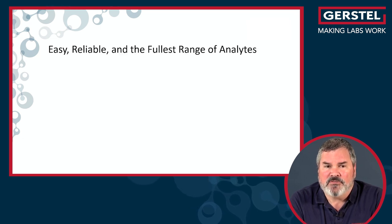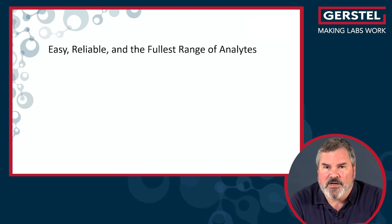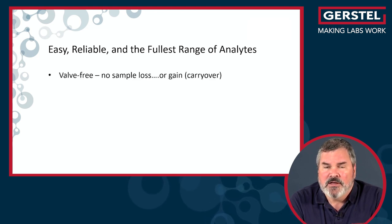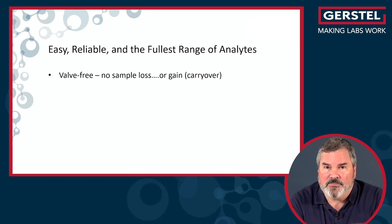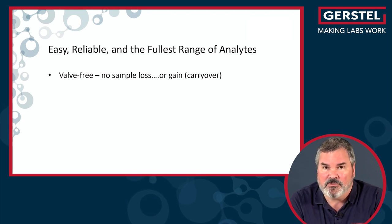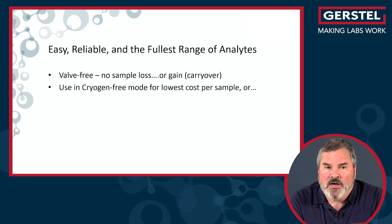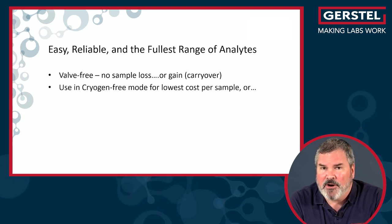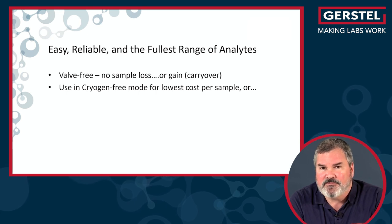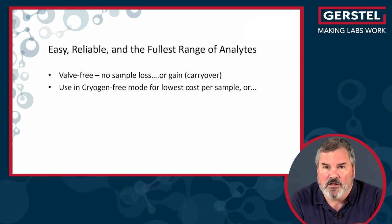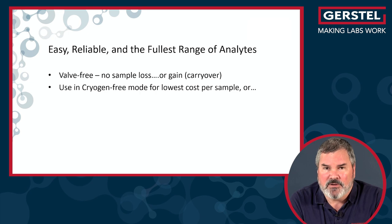The end result is that thermal desorption is a great way to get an easy, reliable, full range of analytes into a GC-MS. It's valve-free — no sample loss or gain. People often forget about that: if you have things that get stuck in a valve, you'll see them sample to sample. The easiest way to solve that problem is to remove the valve, which we've done. You can also run cryogen-free and still get the full range of analytes — propylene to perylene, C3 to C40, C45, C50, whatever your column can handle.